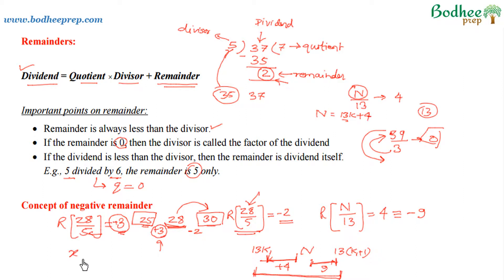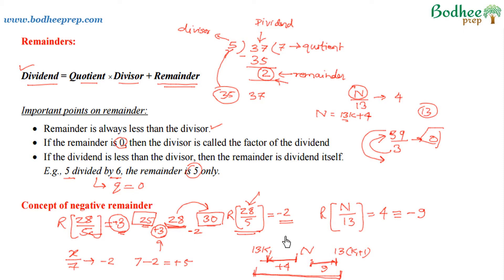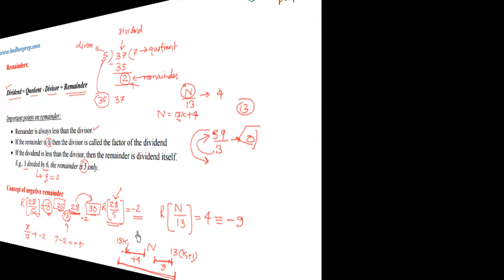So if a number x divided by 7 gives remainder minus 2, then the positive remainder can easily be obtained by adding the negative remainder to the divisor: minus 2 plus 7 equals plus 5, and vice versa. This concept of negative remainder will be used extensively to solve complex questions based on remainders. In the next video we will take some solved examples to apply this logic.